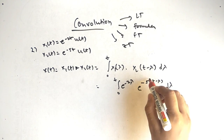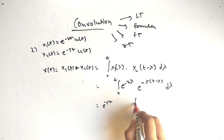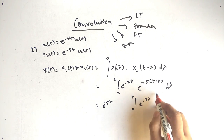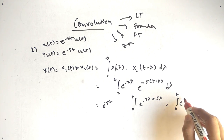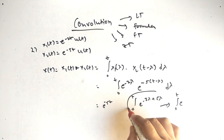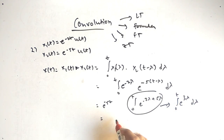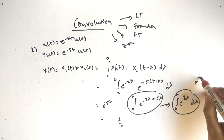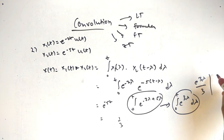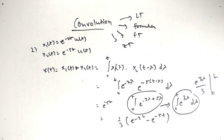We can factor out e raised to minus 5t from the integral. Inside we have e raised to minus 2 lambda times e raised to plus 5 lambda, which is e raised to 3 lambda. So it becomes the integral from 0 to t of e raised to 3 lambda d lambda. After solving this integral and substituting limits, the answer is e raised to minus 2t minus e raised to minus 5t.